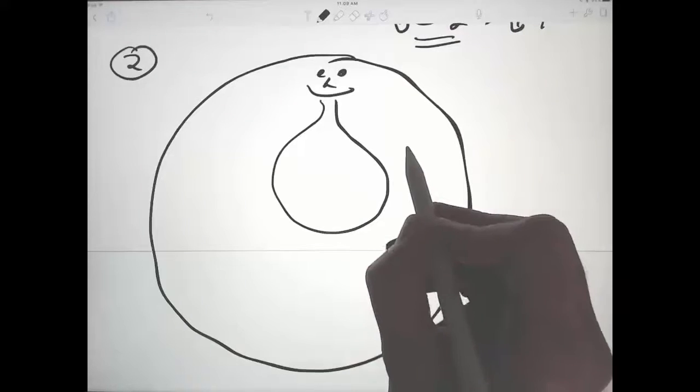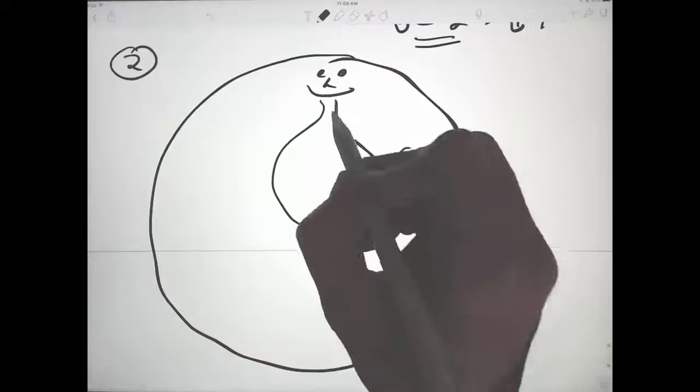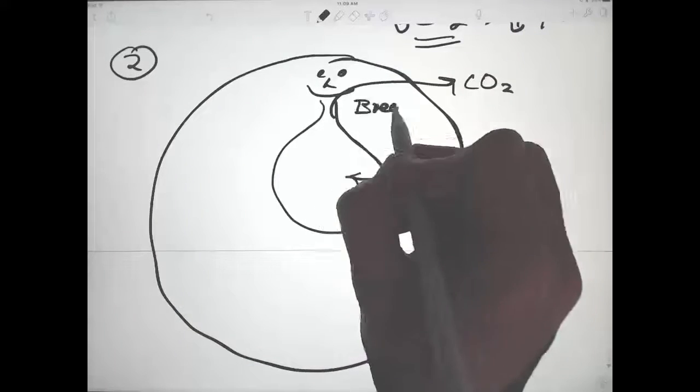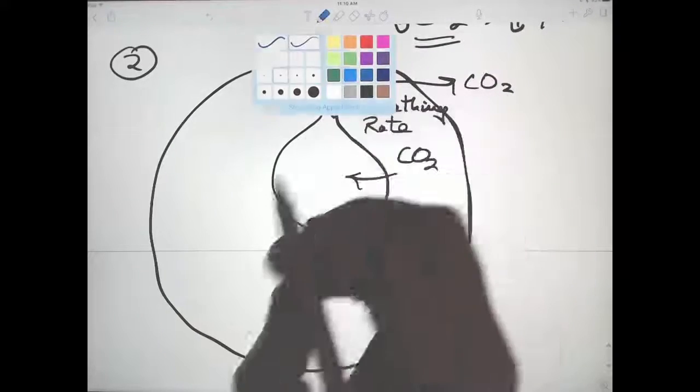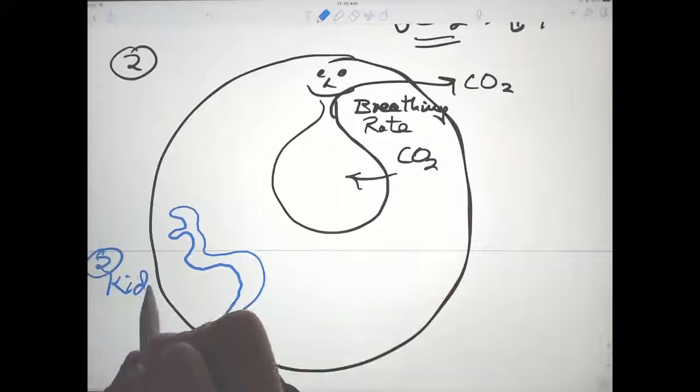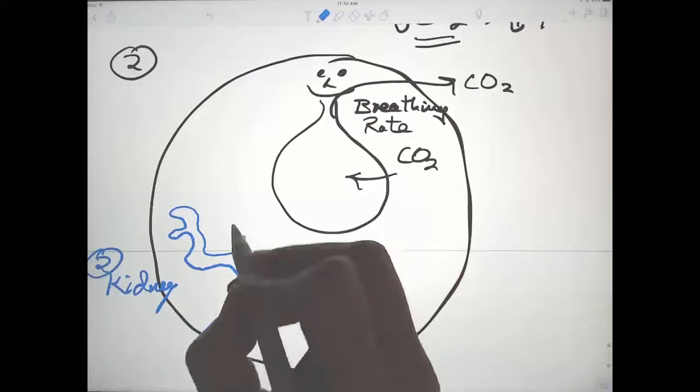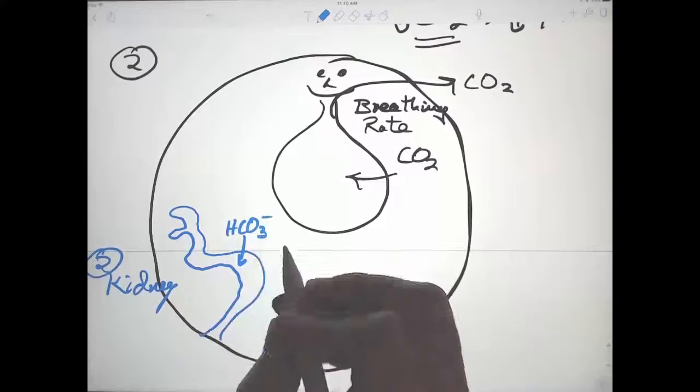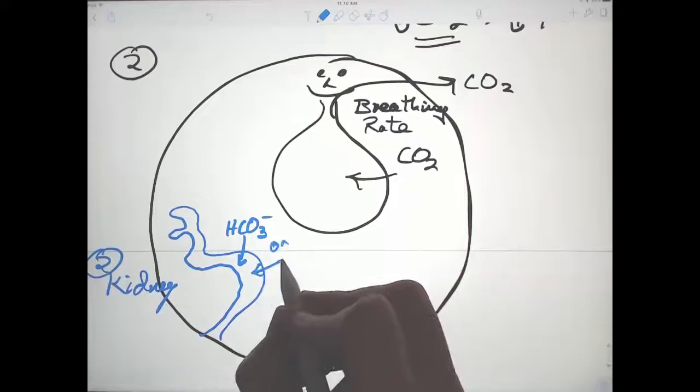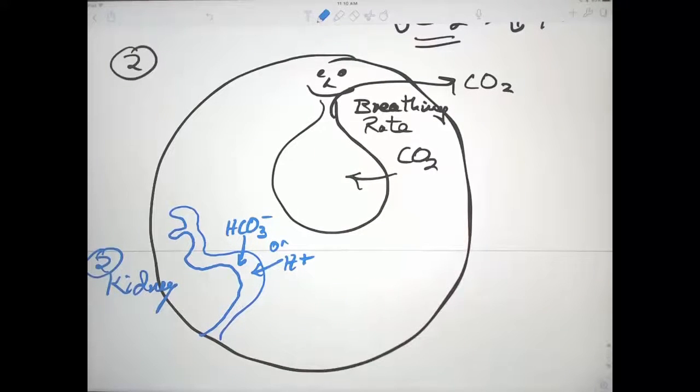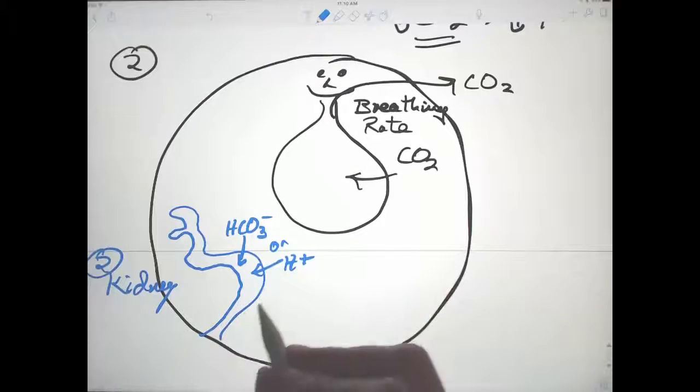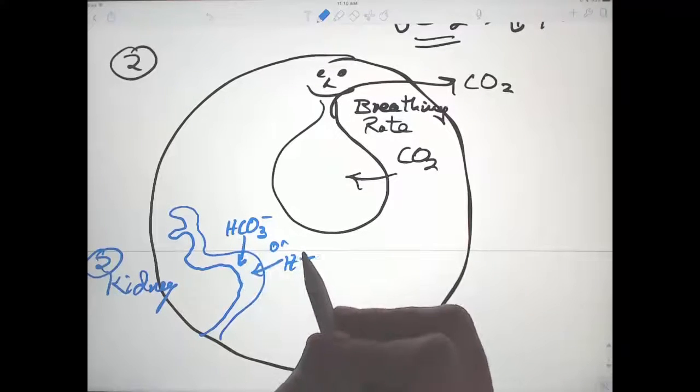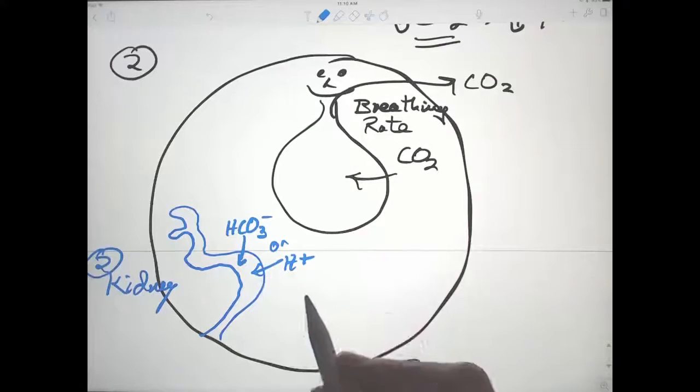The second major mechanism is in the kidney, in which you can selectively remove either bicarbonate or H+. Under normal conditions, you actually have a net acidity. And you can adjust whether you make your fluids either more acid or more basic by how much of the bicarbonate or protons you excrete.